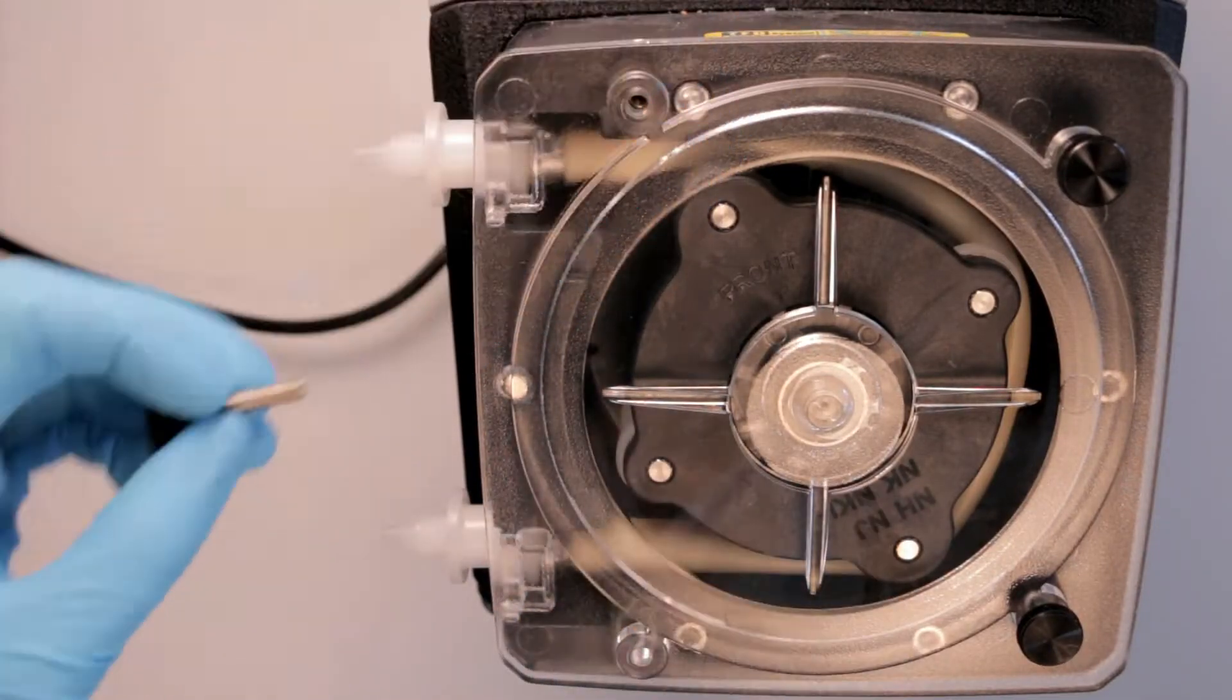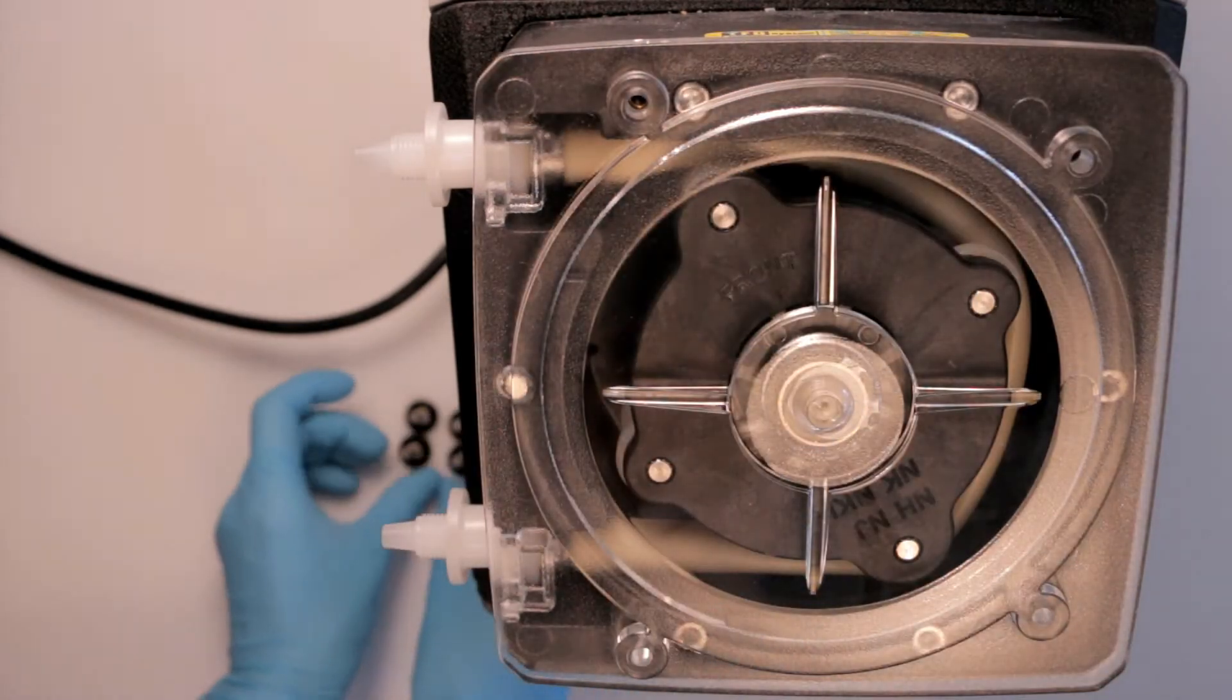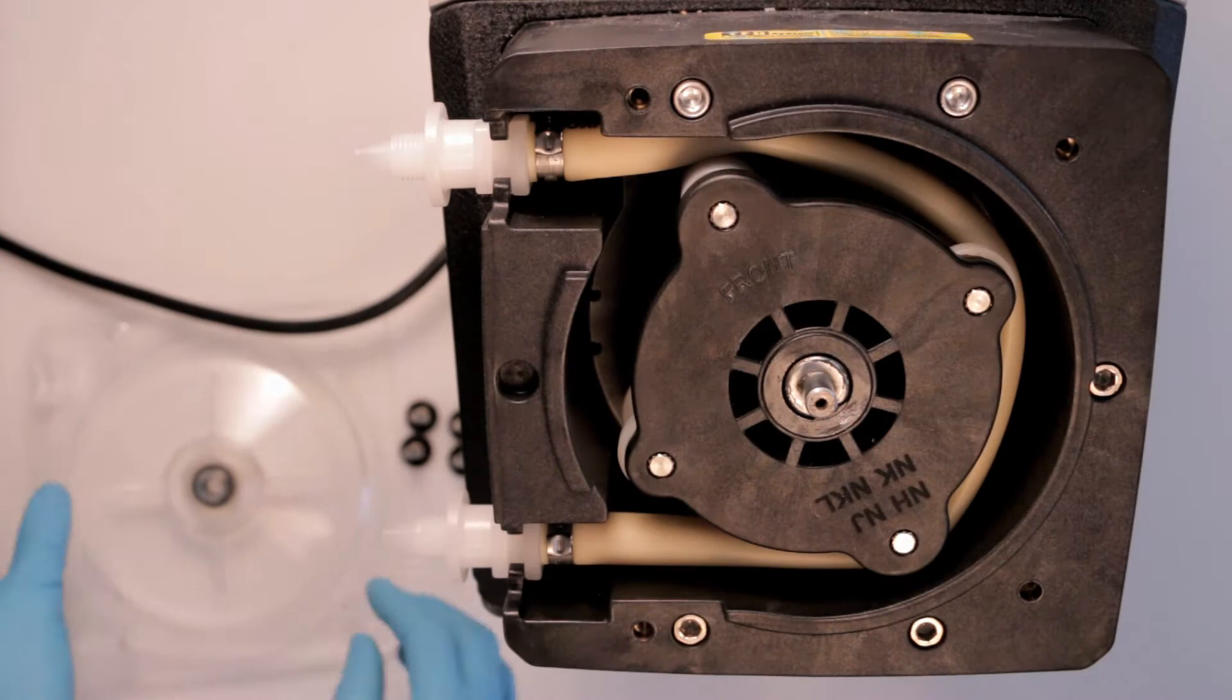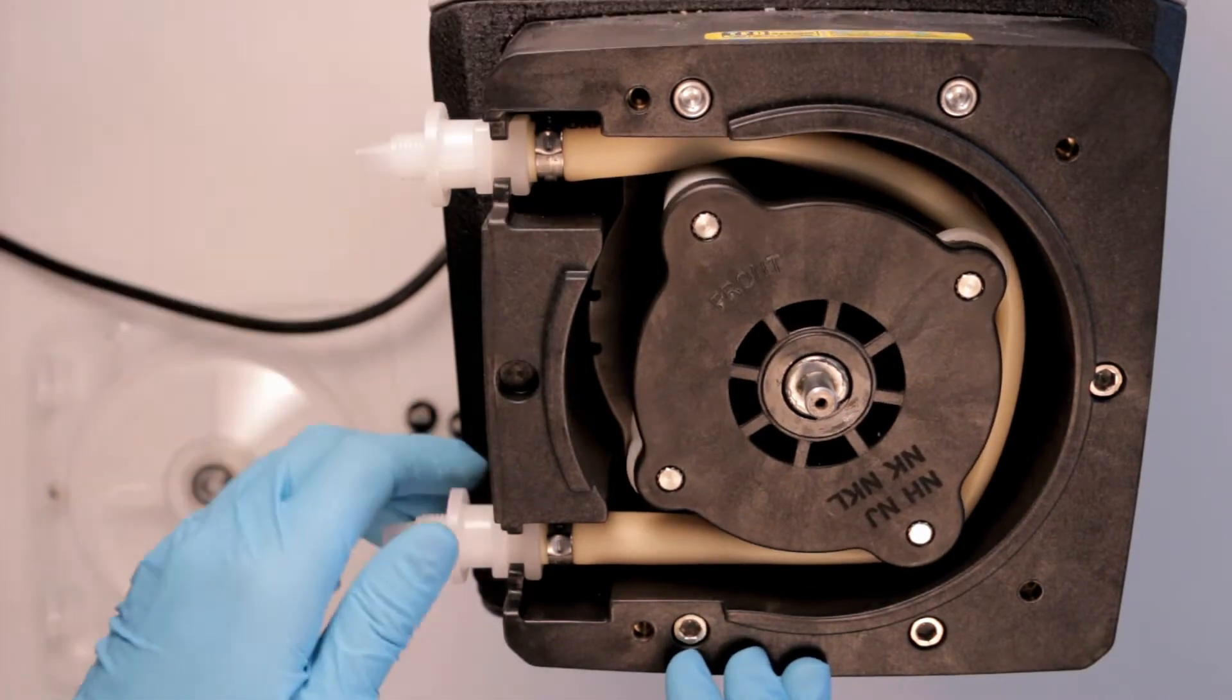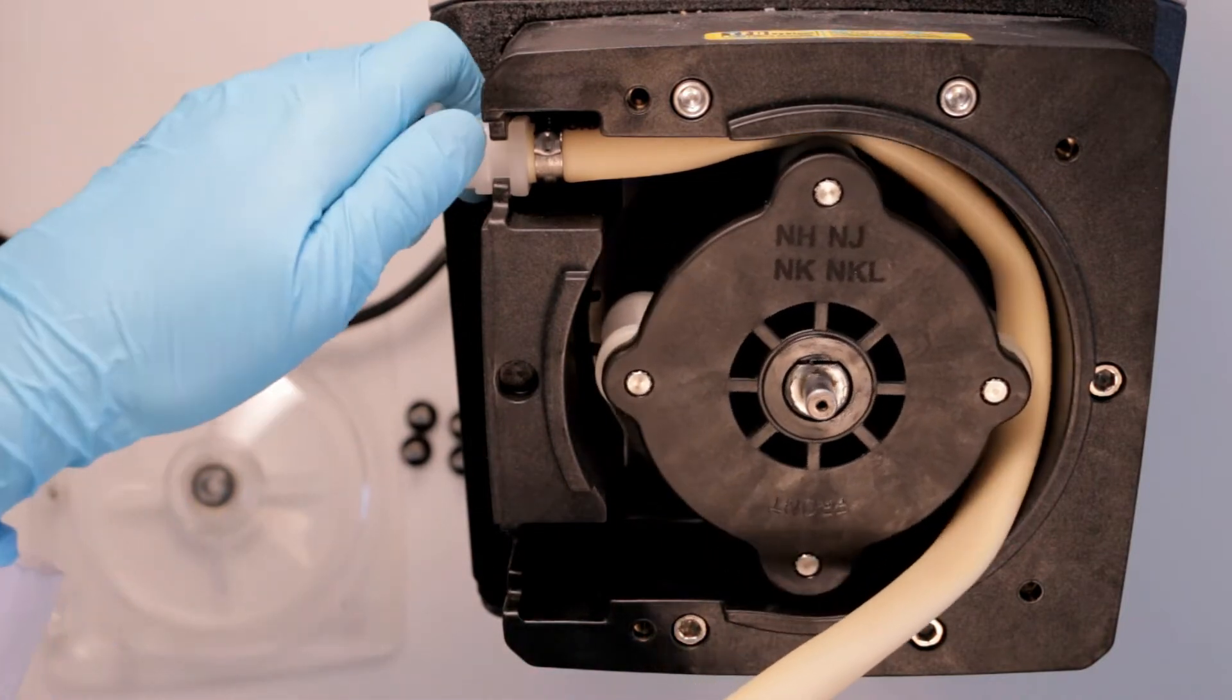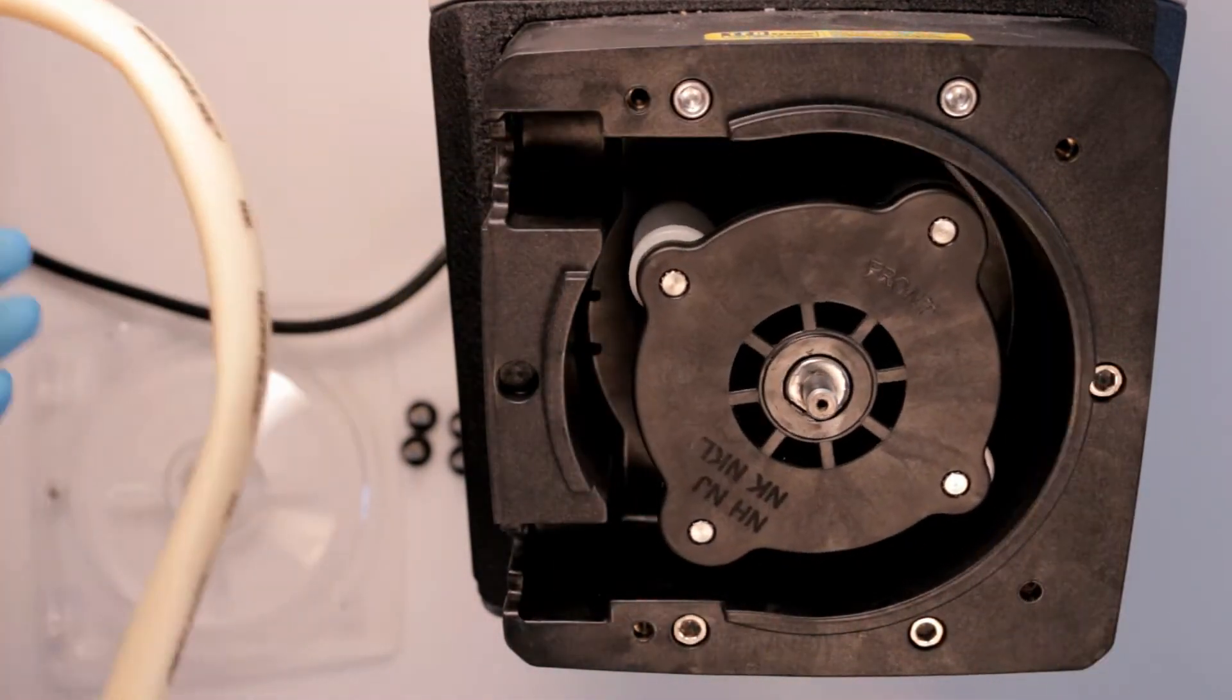Remove the pump head cover. Press the start button to have the pump initiate a slow rotor rotation. This is called the maintenance mode. Once you've removed the tube assembly, press stop.